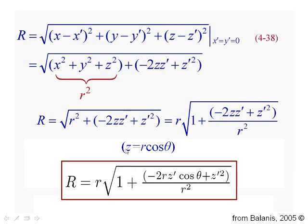One more thing to note here. z, which is the height of the observer above the xy plane, that's just equal to r times cos theta. Theta being the angle of the observer relative to the z-axis. So I can finally write my capital R for this case of the wire antenna as being little r square root of 1 plus minus 2rz prime cos theta plus z prime squared over r squared.